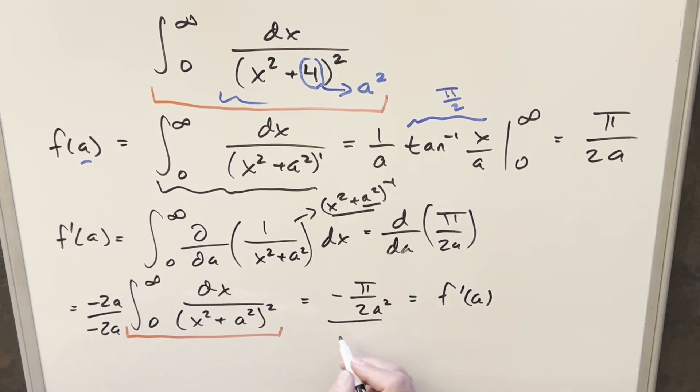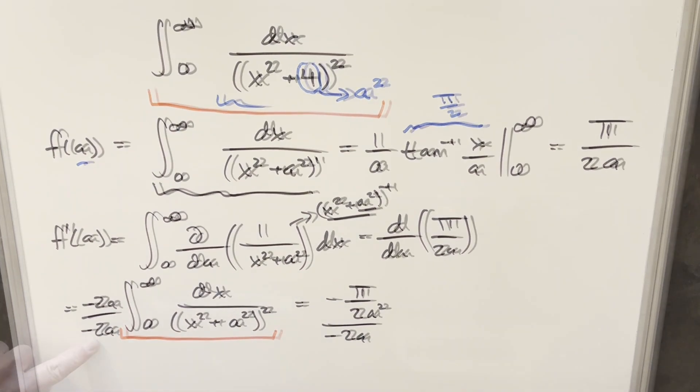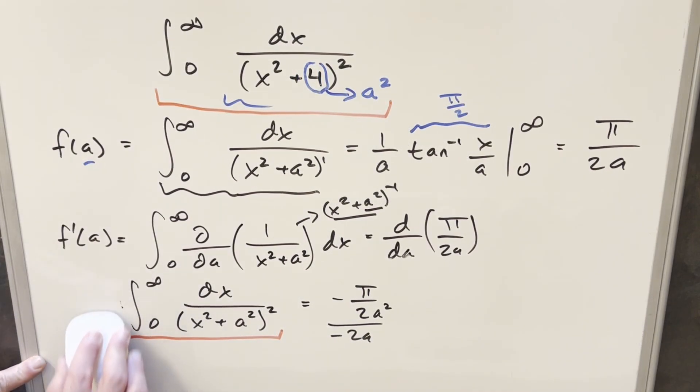So this isn't quite what we want. But all we need to do is let's just divide by minus 2a on both sides. Divide by minus 2a. Divide by minus 2a. But now we don't really care about this part anymore because now when this cancels off, we've kind of isolated exactly what we want, which is just this integral right here. We just need to clean this up a little bit.